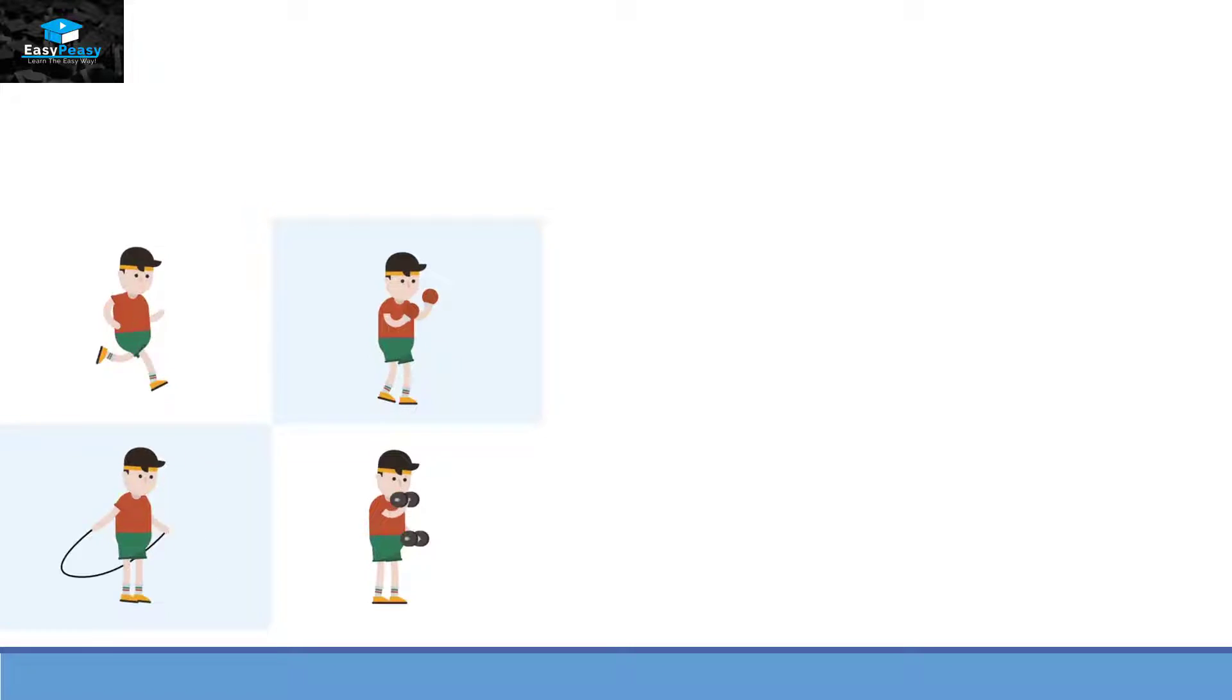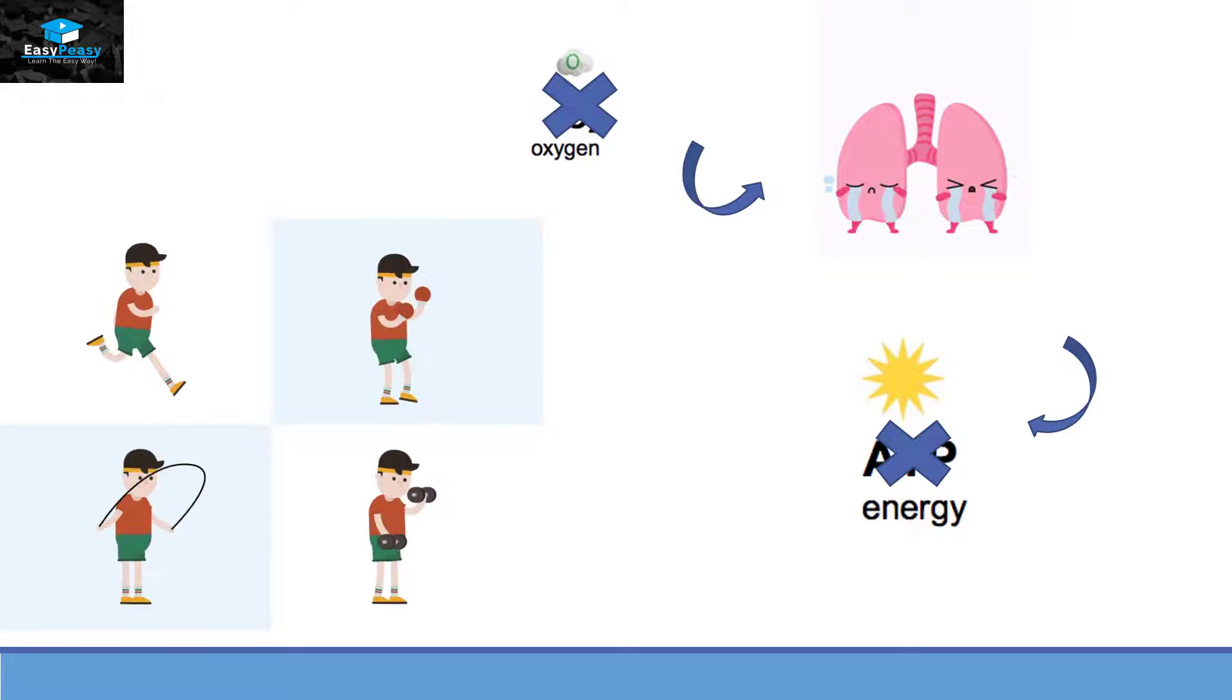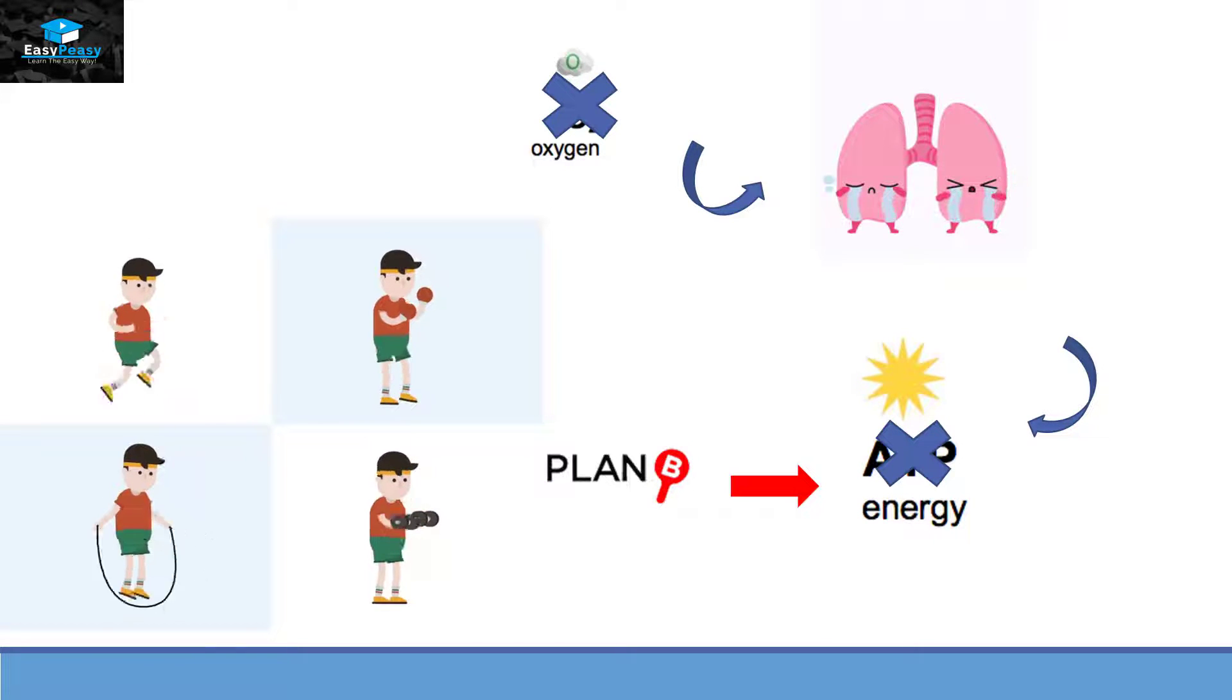So at those times our lungs cannot take enough oxygen to provide energy to perform that type of function. In those cases we need Plan B, and that means that ATP will be generated without the help of oxygen, and that type of respiration is called anaerobic respiration.